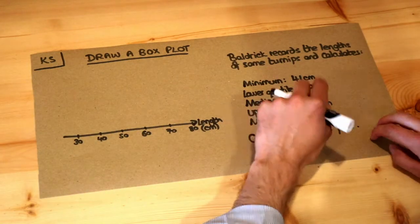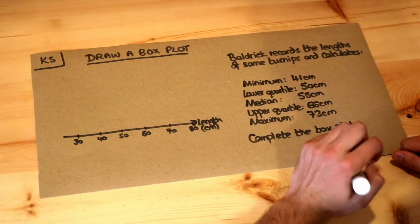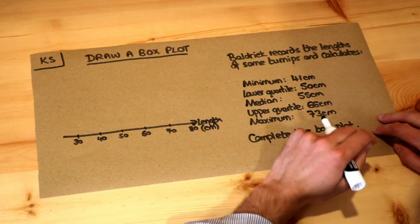It also shows the quartiles and you can see how spread out your data is below the median and above the median. I explore that in my video on interpreting a box plot.